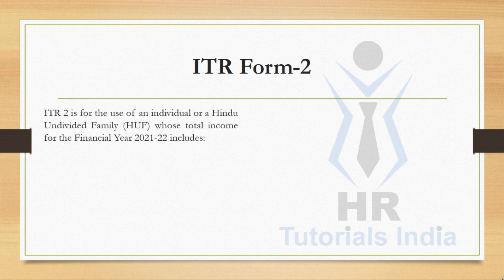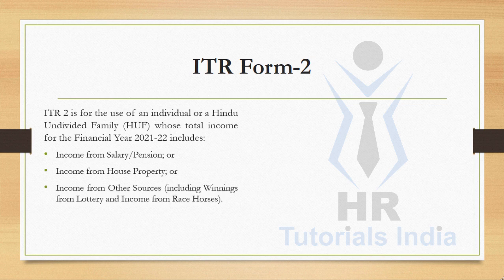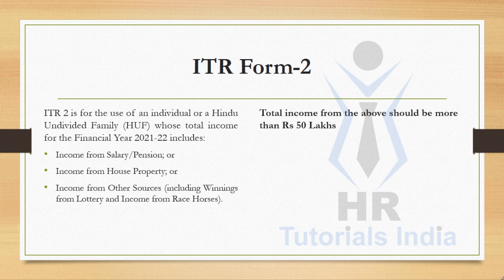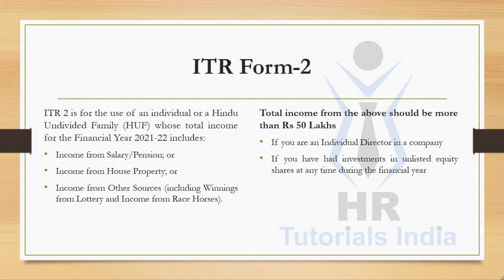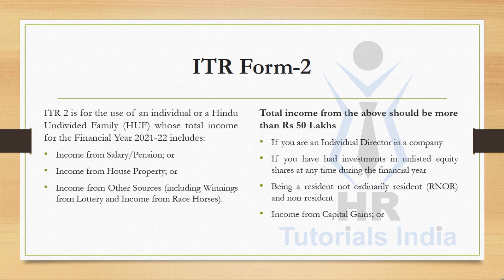ITR Form 2 is for an individual or a Hindu Undivided Family whose total income for financial year 2021-22 is more than 50 lakhs, including income from salary or pension, house property, other sources including winnings from lottery and racehorses. It also applies if you are an individual director in a company, have investments in unlisted equity shares, are a resident or ordinarily resident with capital gains, foreign assets or foreign income, or have agricultural income more than 5,000.